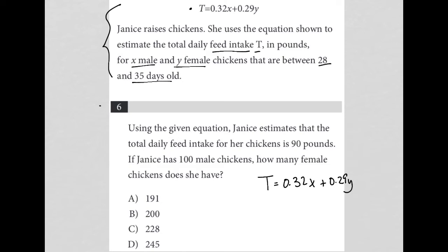Using the given equation, Janice estimates that the total daily feed intake for her chickens is 90 pounds. That means T equals 90. If Janice has 100 male chickens, that means X equals 100. How many female chickens does she have? So Y equals question mark - that is what we're finding.